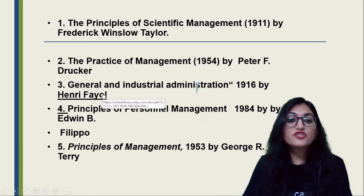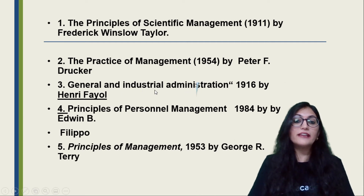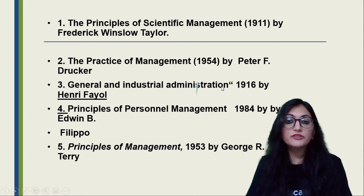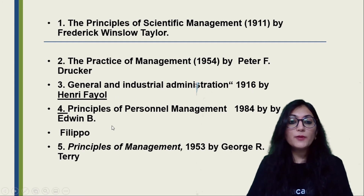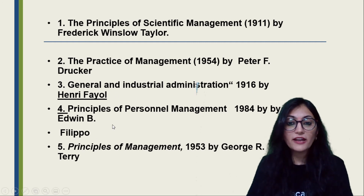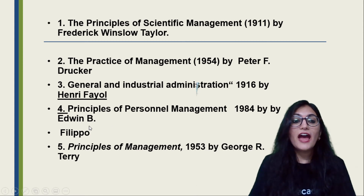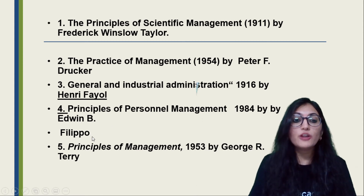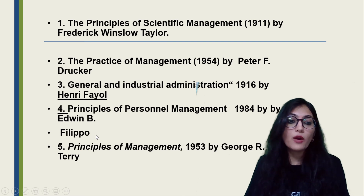The third book is General and Industrial Administration, 1916, by Henry Fayol. Then Principles of Personnel Management, 1984, by Edwin B. Flippo. This book is from Edwin B. Flippo.